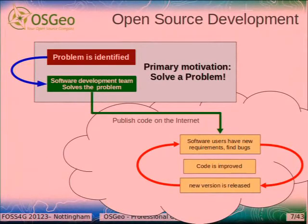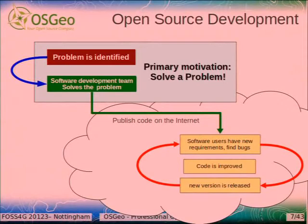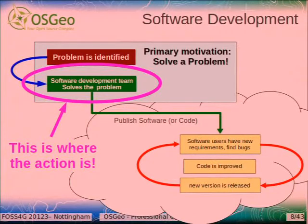It becomes open source development when you take the solution and publish the code on the internet. And if the code is any good, and there are more people out there who have the same problem, then something interesting happens. Software users have new ideas, they develop new requirements, and they find bugs in the software — because software is always buggy. So what they do is improve the code and release a new version, and you get into this cycle, and this is a process that never ends.